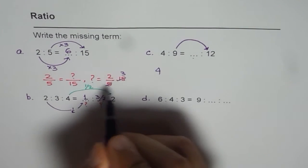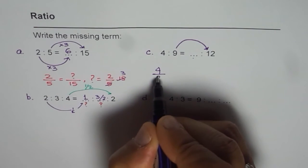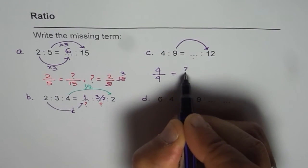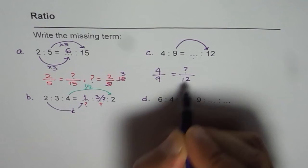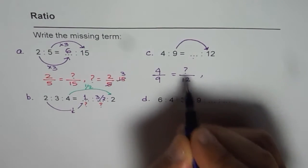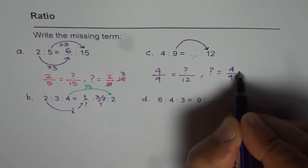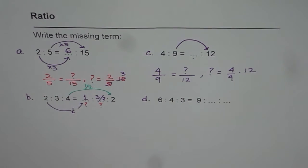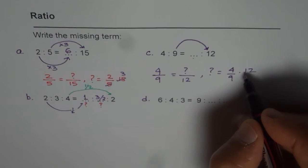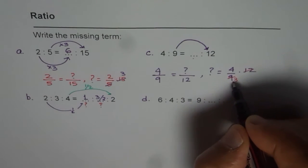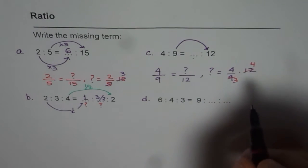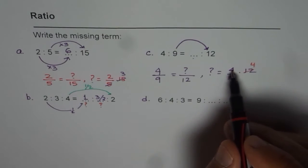So in such questions converting them to fractions and then finding answers is a better option. Now we can do 4 over 9 equals to something over 12. Now that something equals 4 over 9 times 12. That can be simplified. Both can be divided by 3. We get 3 times 4. So what do we get? We get 16 over 3.